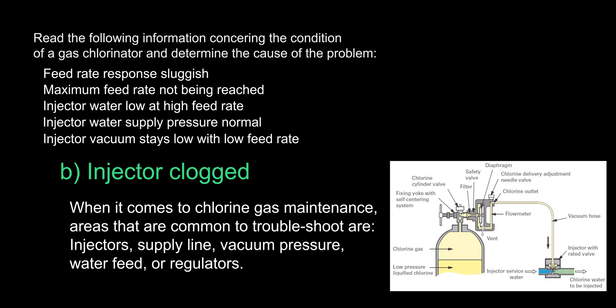The answer is B, injector clogged. The issues described are inherent to that of an injector clog because higher feed rates cannot be achieved even though water pressure is normal and the system works when the feed rate is low. No information is given on whether there is an issue with the supply line, which would be determined with a pressure regulator. Chlorine gas usage is not as common nowadays given the potential for danger associated with it; however, questions about it may still appear on your exams. For more information on chlorine gas maintenance, I have provided two useful links in the description.